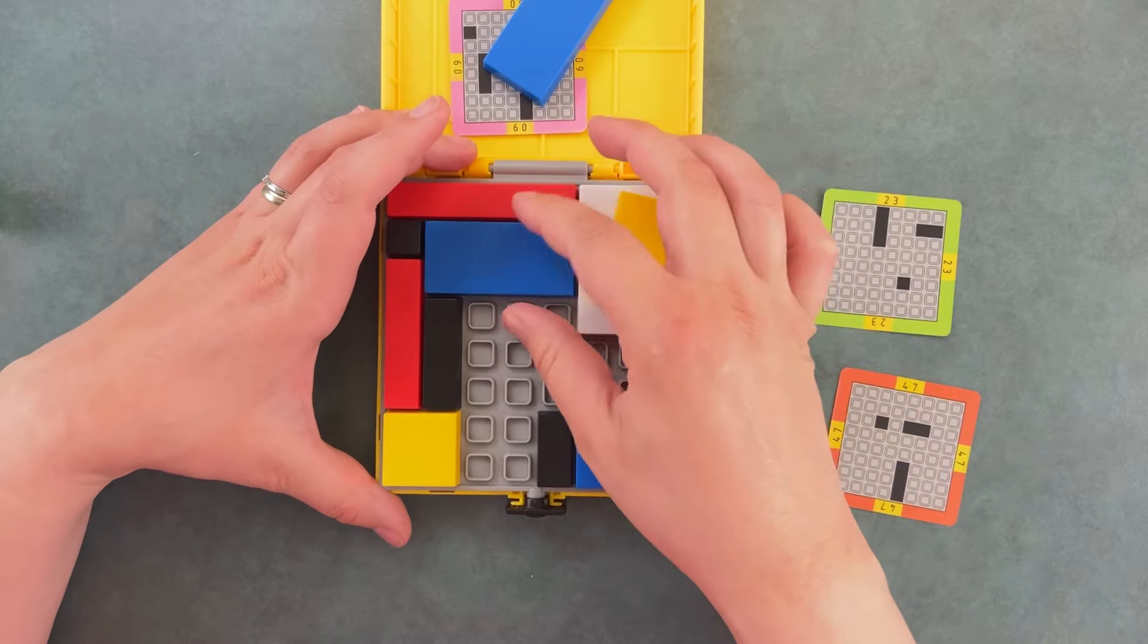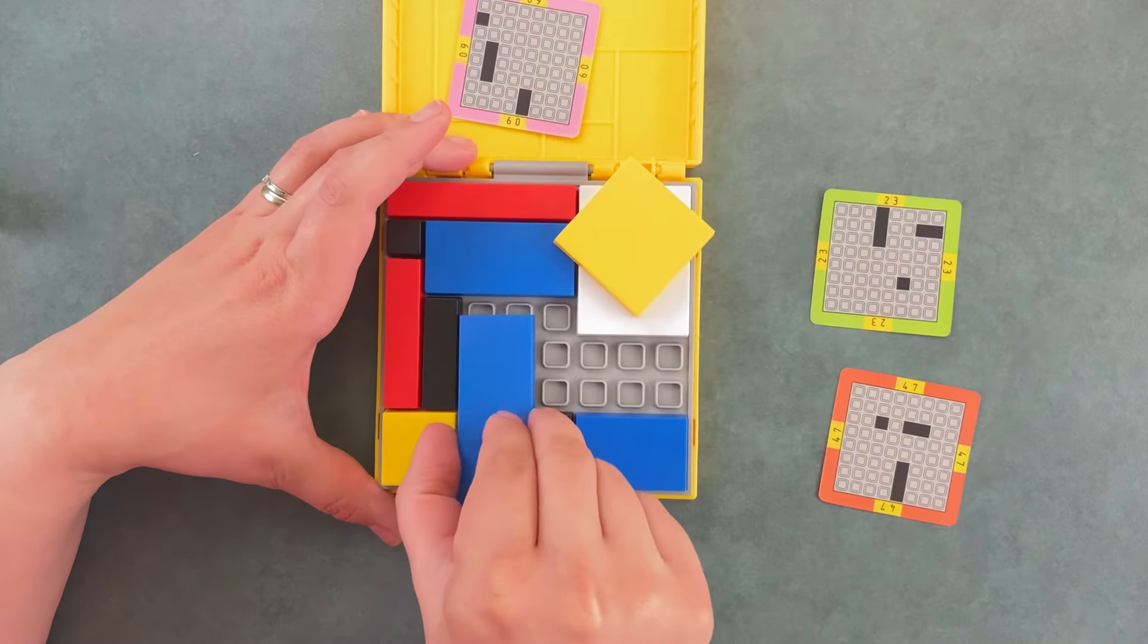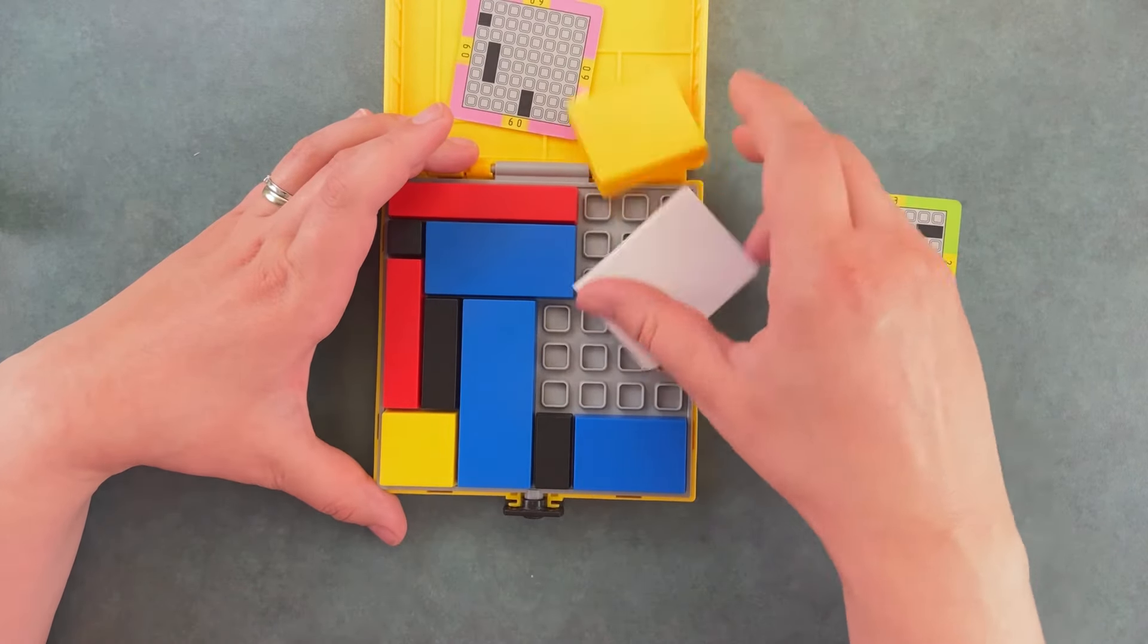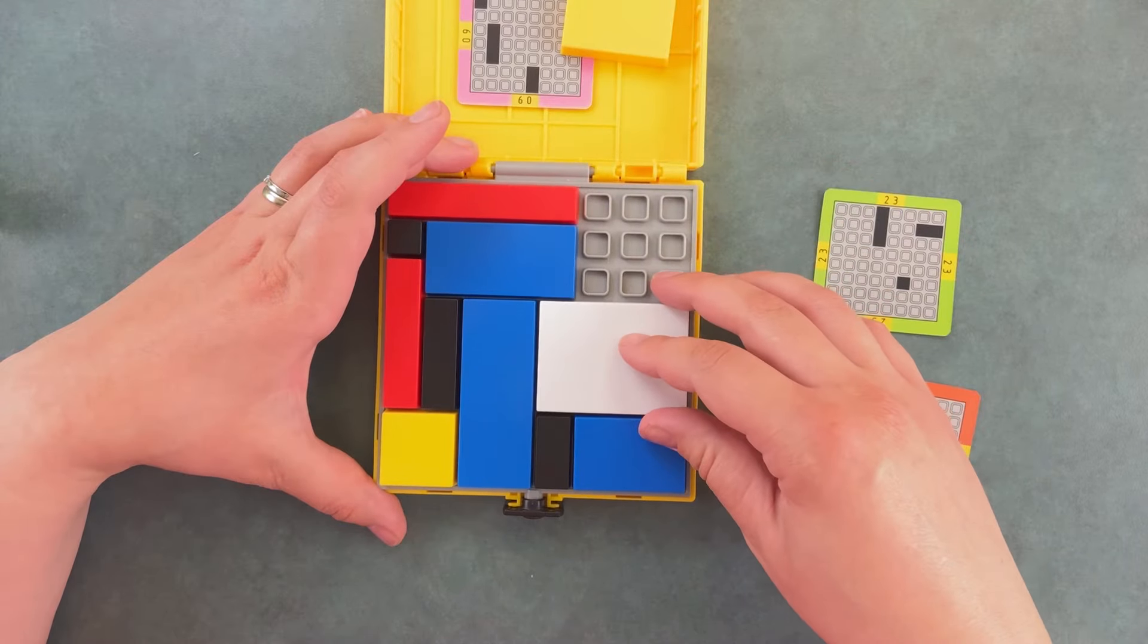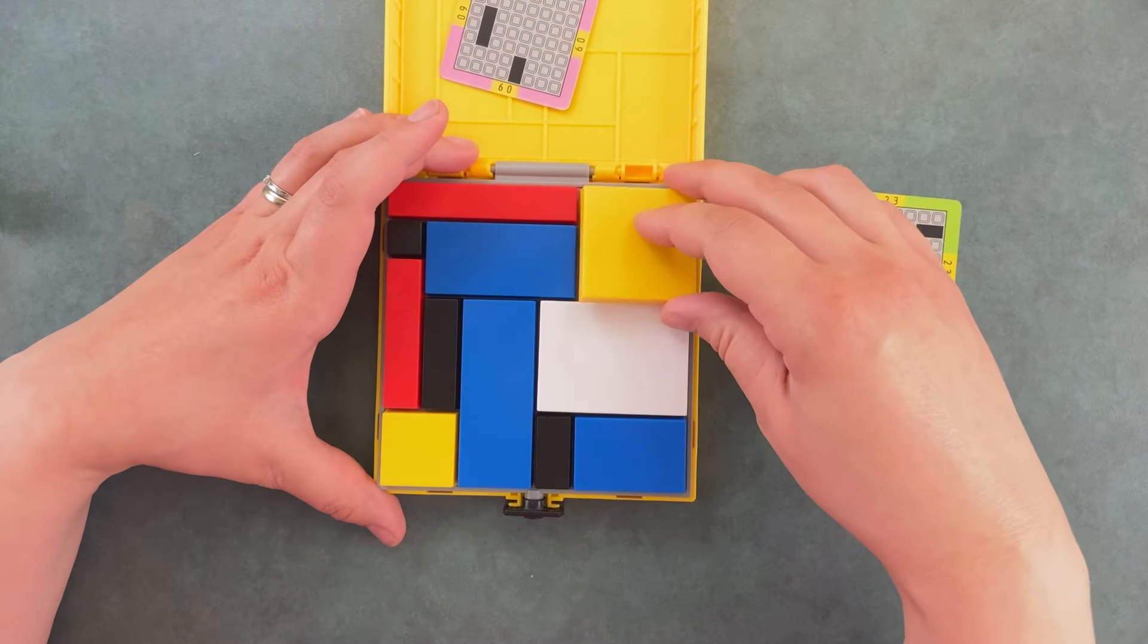Take this blue piece and place it up here. Take this blue piece, place it into the center. Take the white piece and lay it sideways, and the yellow piece placing it in the top.